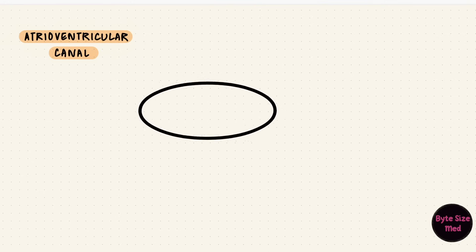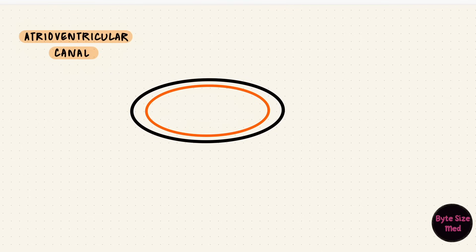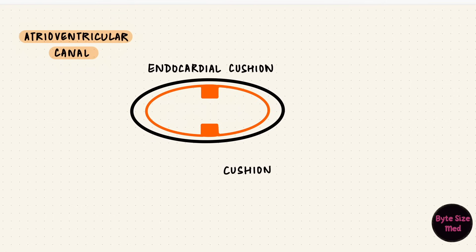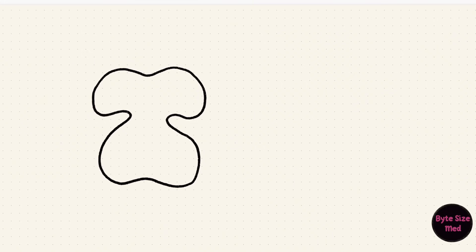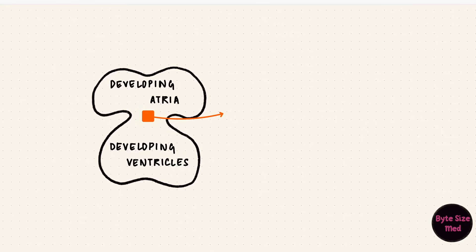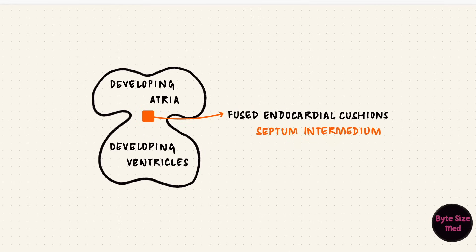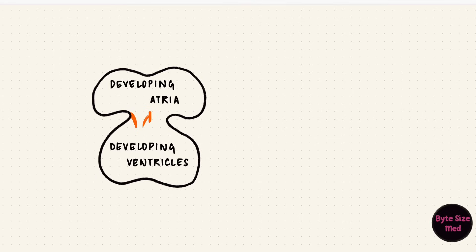If we look at the atrioventricular canal — think of it this way, you're in the atrium looking into the ventricle — there are swellings called cushions that develop from the superior and inferior margins, with lateral swellings as well. These are called endocardial cushions. The superior and inferior cushions fuse, so now there are two separate pathways into the ventricles. The fused endocardial cushions separating the atrioventricular canal are called the septum intermedium. Local proliferation of mesenchymal tissue around each atrioventricular orifice forms the valves — the tricuspid valve on the right and the bicuspid mitral valve on the left.